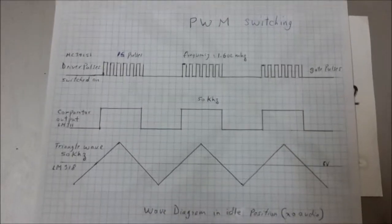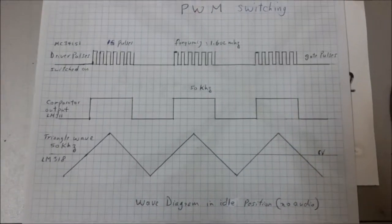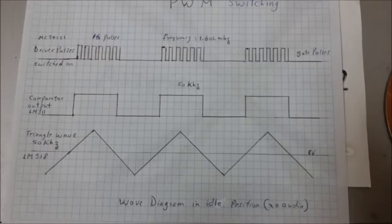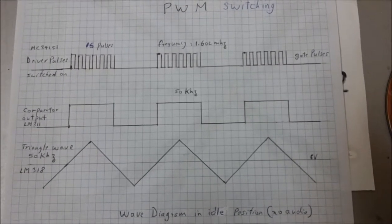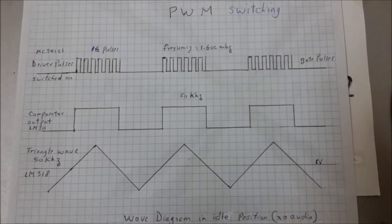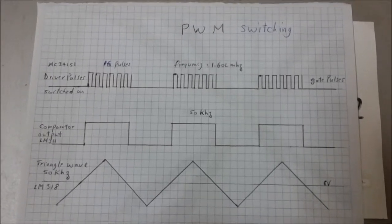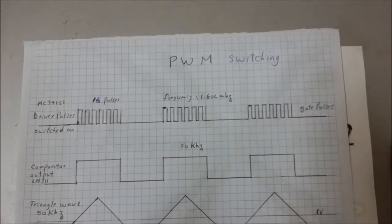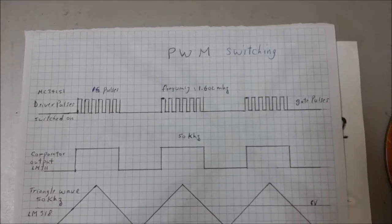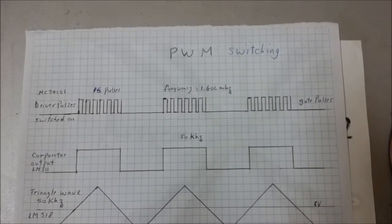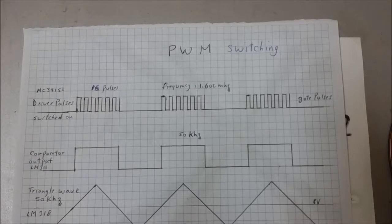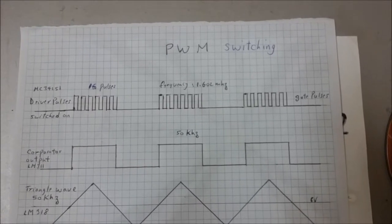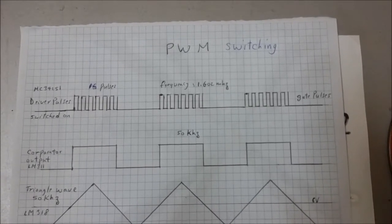Looking at the waveform diagram for the pulse width modulation we can see exactly what's happening. There's a triangular waveform coming out and the comparator in between and the actual driving pulses that are 16 pulses per every time that the comparator goes positive and they are fed directly into the MOSFETs.